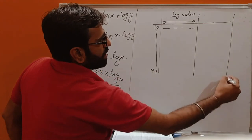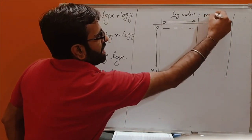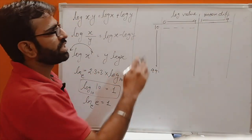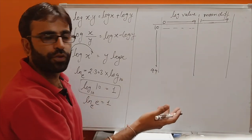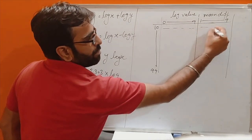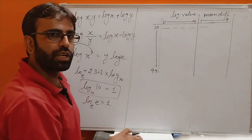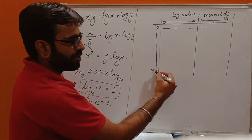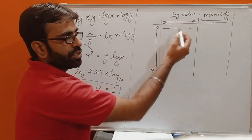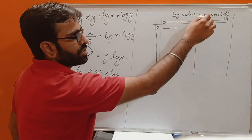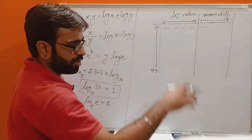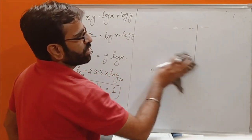The last part of the table is the mean difference, which is from 1 to 9. This represents the 4th digit of your given number for which we find the log value — it contains 1-digit or 2-digit numbers. So the first column has the 2-digit number, the middle is the log value for the 3rd digit, and the mean difference is for the 4th digit.